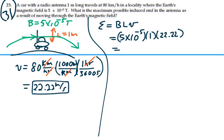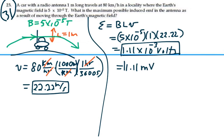1.11 times 10 to the minus 3 volts, or we could say 1.11 millivolts. That would be the induced voltage on this antenna as this car is moving at 80 kilometers per hour: 1.11 millivolts.